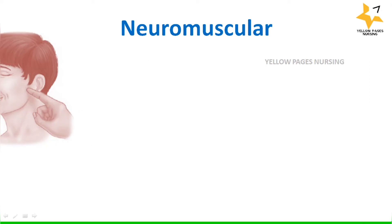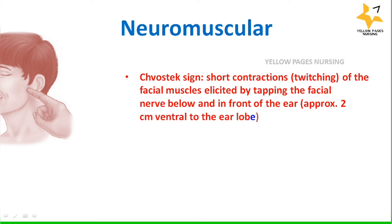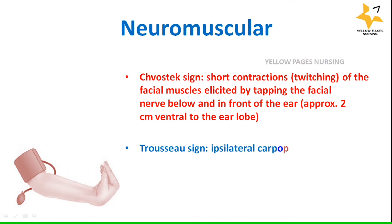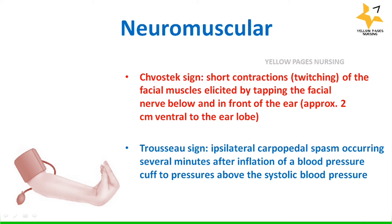The most important neuromuscular signs are Chvostek's sign and Trousseau's sign. Chvostek's sign: when the facial nerve is tapped below and in front of the ear, approximately two centimeters anterior to the earlobe, there is short contraction or twitching of the facial muscles on that side. Trousseau's sign: ipsilateral carpopedal spasm occurring several minutes after inflation of a blood pressure cuff to pressures above systolic pressure.